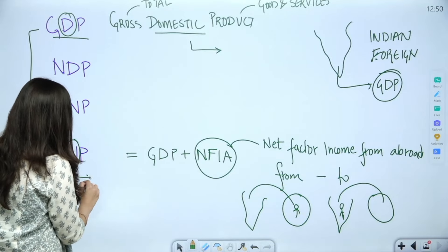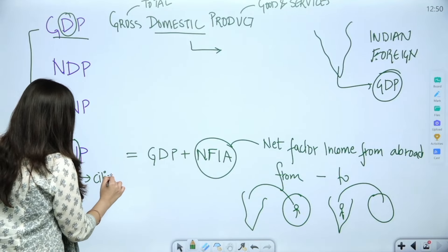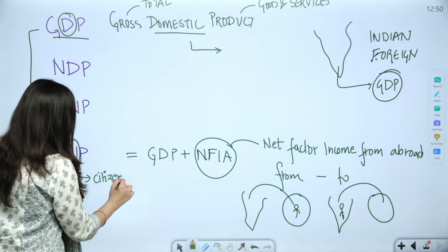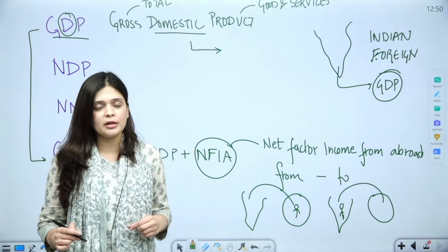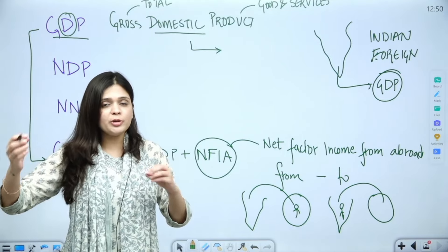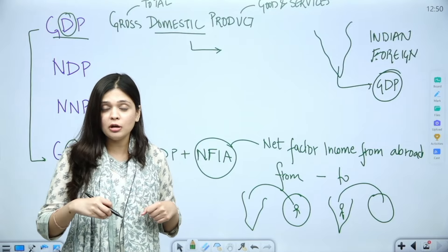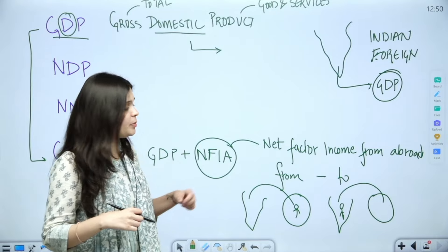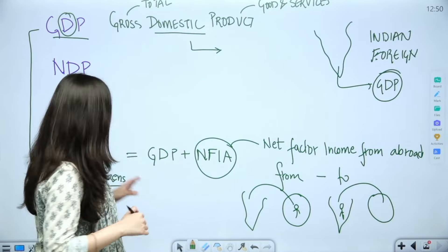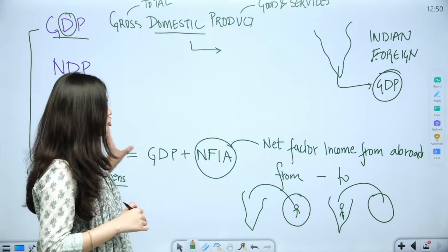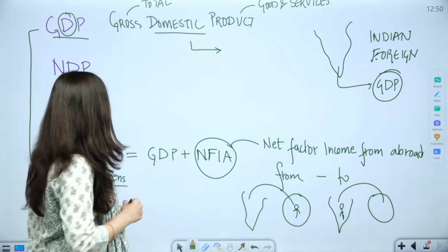So it becomes 'national' — we are talking about our citizens. Whether they are in India or abroad, we add their income. And the people who are in India but are not Indian citizens and are earning here, we subtract their income. So GNP = GDP + NFIA, and the only difference between GDP and GNP is net factor income from abroad.